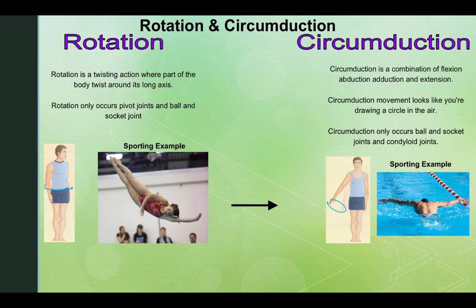Rotation and circumduction. Rotation is a twist action where part of the body twists around its long axis. Rotation only occurs at pivot joints and ball and socket joints. Imagine a person turning left and right — a sporting example would be a twist in gymnastics. The opposite of this is circumduction. Circumduction is a combination of flexion, adduction, abduction, and extension. Circumduction movements look like drawing a small circle in the air. Circumduction only occurs at ball and socket joints and condyloid joints. Here you can see the arm rotating in a circumduction motion — an example of this would be butterfly stroke in swimming.